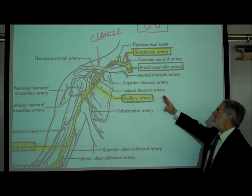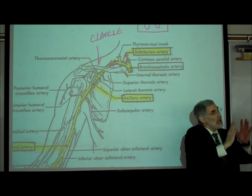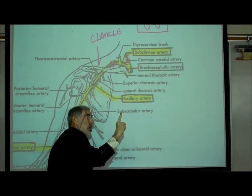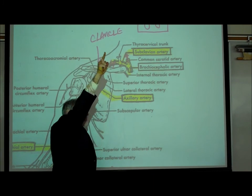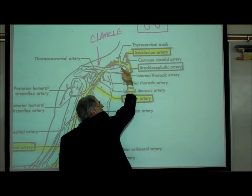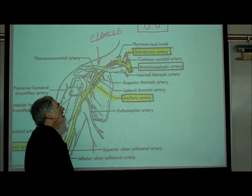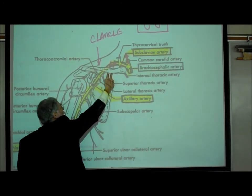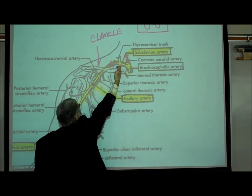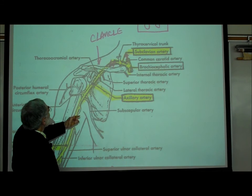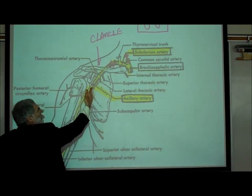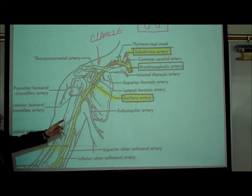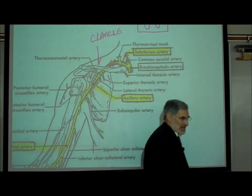The brachiocephalic artery — the arm-head artery — bifurcates, forming a common carotid artery carrying blood upward to the head, and a subclavian artery. The subclavian runs right under the clavicle. As the oxygenated blood is carried in the subclavian, once it reaches the armpit, its name changes and it's called the axillary artery.